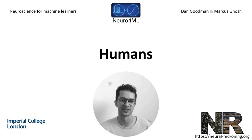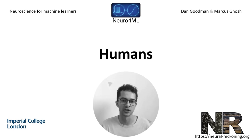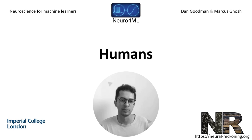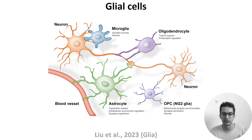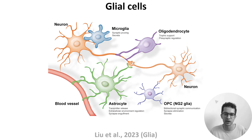In the last video we discussed connectomes — full diagrams describing how every neuron connects to every other neuron in an animal. We don't have a connectome for the human brain, so in this video we're going to look at a more macro level. But first, neurons may only be some of the story, as there are other cells in the brain too, known as glial cells. In humans, the ratio of neurons to glia is estimated to be roughly 60 to 40.